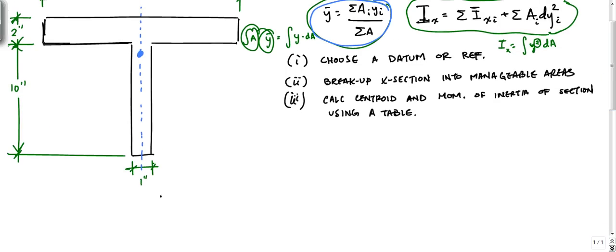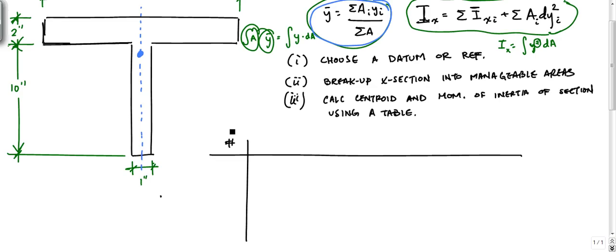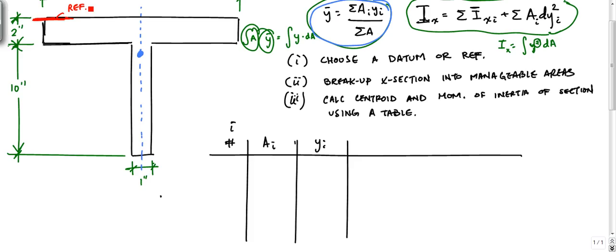I'm going to create a table. I'll call this column the number column — for every element in my cross-section, this is my index I. I'll have a column for A_i, the area of that element. Then the distance from the datum — for this problem I'm going to choose this bottom edge as my reference for the Y-bar calculation. That'll be where I define all these distances Y_i. And then I'll need another column for A_i times Y_i.